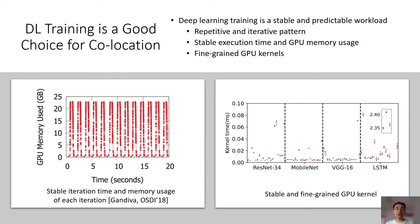We find deep learning training is a good choice for co-location with games. Previous work has revealed that deep learning training is very stable and predictable — it just repeatedly does the same computation on different batches of data. Therefore, its computation and memory usage patterns are very stable. Also, the GPU kernels are usually very fine-grained. The execution time of GPU kernels for deep learning training are usually millisecond level and very stable. These characteristics are very helpful for co-location with games in a collaborative manner.